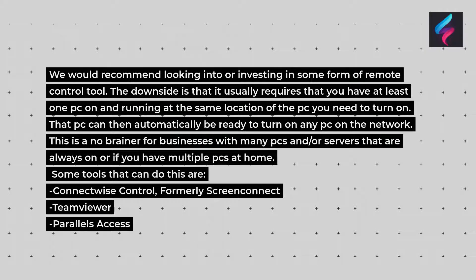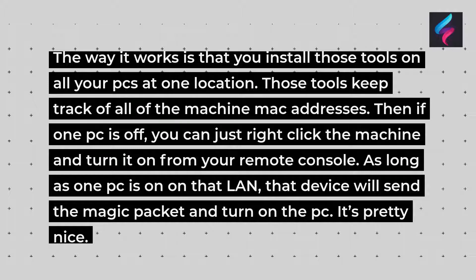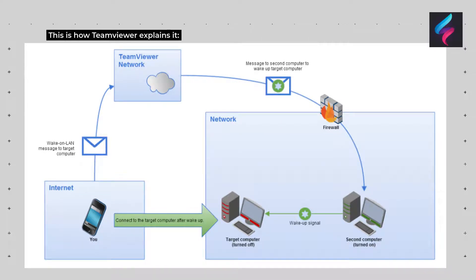Some tools that can do this are ConnectWise Control (formerly ScreenConnect), TeamViewer, and Parallels Access. The way it works is that you install those tools on all your machines at one location. Those tools keep track of all of the machine MAC addresses. Then if one PC is off, you can just right-click the machine and turn it on from your remote console. As long as one PC is on on that LAN, that device will send the magic packet and turn on the PC. It's pretty nice.